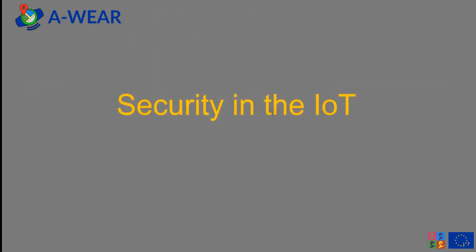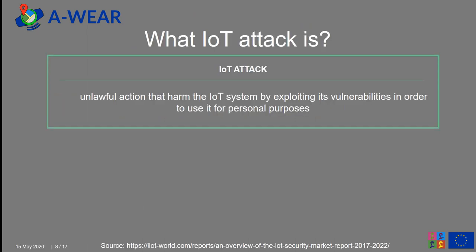Let's focus on security in IoT. First of all, let's define what an IoT attack is. An IoT attack is an unlawful action that harms the IoT system by exploiting its vulnerabilities in order to use it for personal purposes. It is worth remembering that the more things, the more connectivity and software solutions, and therefore the more types of attacks.